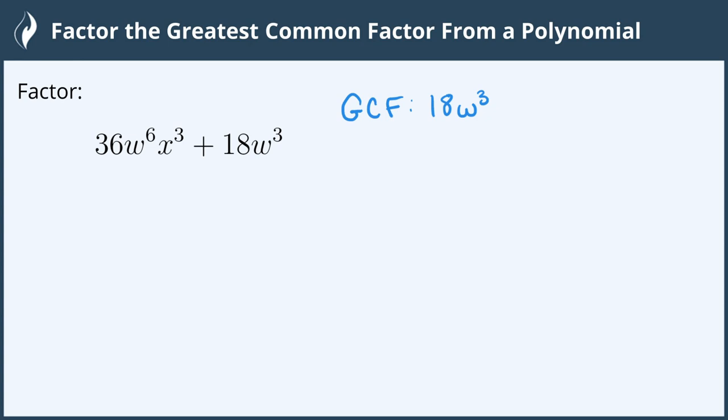When factoring something out from a polynomial, this is the opposite of the distributive property. So we'll put the greatest common factor, 18w cubed, on the outside of the set of parentheses, and what is left after we divide will be on the inside.